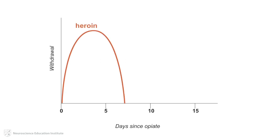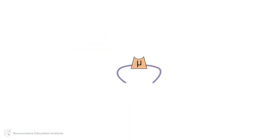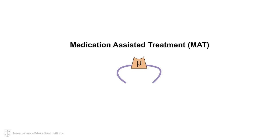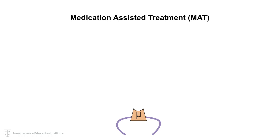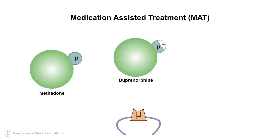Withdrawal symptoms can be fairly intense and can last for over a week. In order to promote abstinence from opioid abuse, one can use medications that occupy mu opioid receptors in order to lower the experience of withdrawal symptoms. This is known as medication-assisted treatment, or MAT. There are primarily three pharmacological agents used in MAT for opioid use disorder: methadone, buprenorphine, and naltrexone.